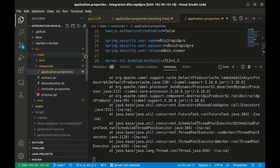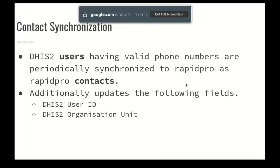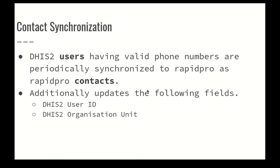For contact synchronization to work, the middleware picks only DHIS2 users with valid phone numbers and periodically synchronizes them to RapidPro as RapidPro contacts. Existing contacts matching DHIS2 users will be updated if there are any changes. In addition to the phone number, the middleware also synchronizes the DHIS2 organization unit and DHIS2 user ID as additional fields into the RapidPro contacts, since these are needed for the aggregation flow.